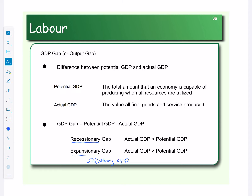So we need to be concerned about recessionary gaps because our economy is contracting and our unemployment rate is high. We also need to be concerned about expansionary gaps — that is, our economy is overheated and that tends to drive up prices, which can also hurt the economy. If you can't find enough workers, you're going to have to limit hours. If you have to pay twice as much for your workers, you can't afford as many — it's going to hurt your business as well. So there's concern about both recessionary and expansionary gaps.